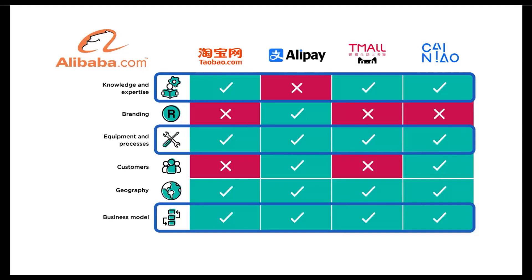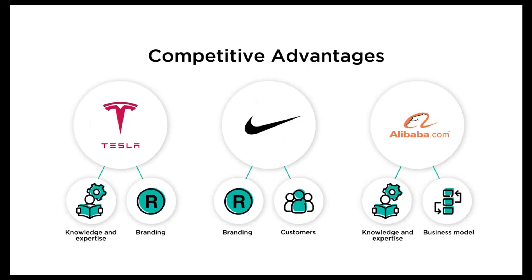To sum it up, businesses and activities in a firm can be related in different ways, some of which are more important than others. It is useful to think about what resources are being shared and what resources aren't, and how crucial those resources are to competitive advantage. For Tesla, having electric car expertise and a compelling brand was very important. For Nike, a brand synonymous with athletic achievement and deep reach into its distribution channels was very important. For Alibaba, its expertise in creating platforms to connect buyers and sellers while using data to optimize efficiency was its most important resource.